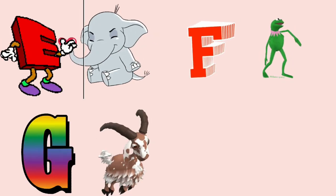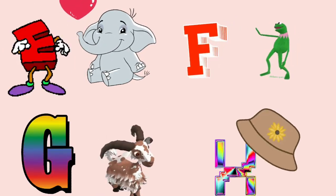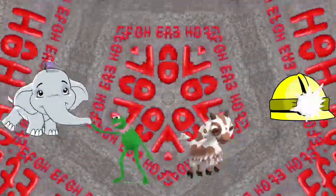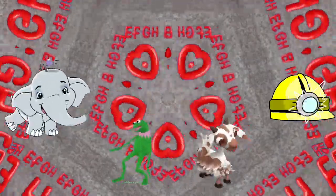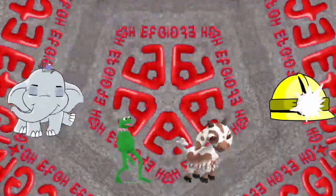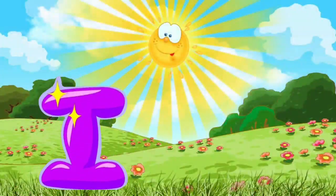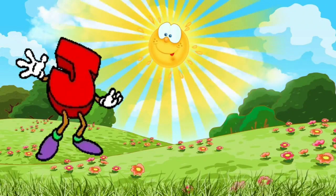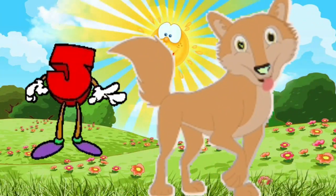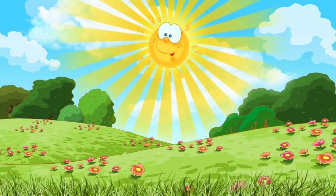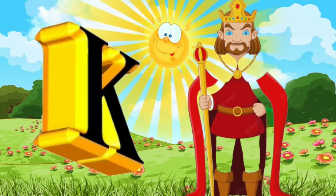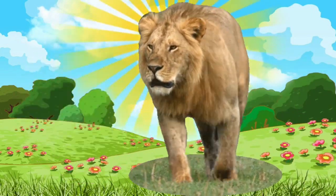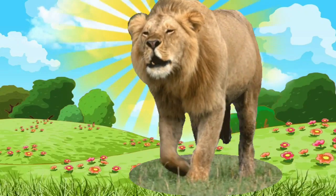Dum-dee-da-dum-dee-dum, dum-dee-da-dum-dum-dum. I is for ice, I-I-ice. J is for jackal, j-j-jackal. K is for king, k-k-king. L is for lion, l-l-lion.